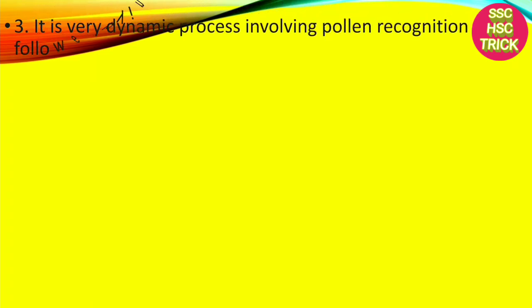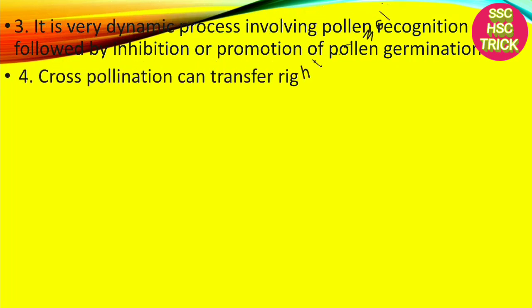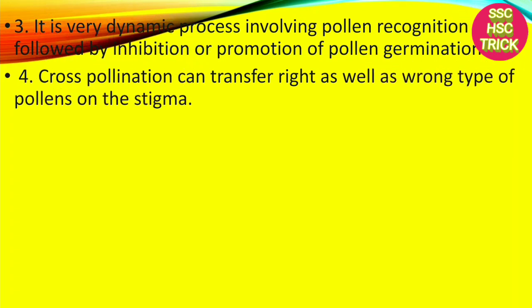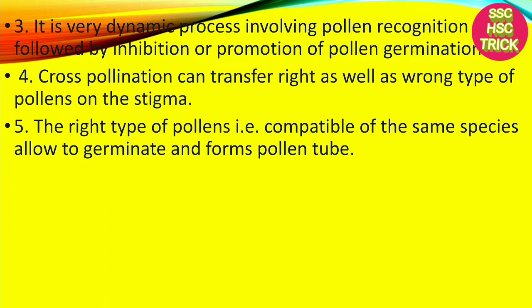It is a very dynamic process involving pollen recognition followed by inhibition or promotion of pollen germination. Cross-pollination can transfer right as well as wrong type of pollen on the stigma. The right type of pollen, compatible with the same species, is allowed to germinate and forms pollen tubes.